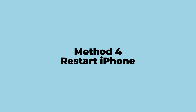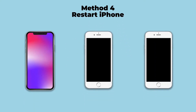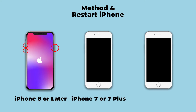Method 4: Restart iPhone. Restarting the iPhone is the most common and effective method no matter what the problem is. Apple also suggests this method to fix flash is disabled on iPhone. For iPhone 8 or later, press and quickly release the volume up and down buttons successively, then press and hold the power button until you see the Apple logo. For iPhone 7 or 7 Plus, press the power and volume down buttons at the same time and hold them until the Apple logo appears. For iPhone 6 or older, hold the power and home buttons at the same time until the Apple logo appears.